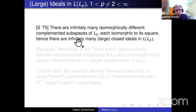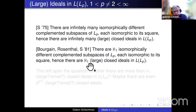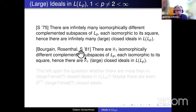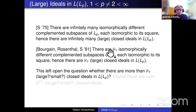This fact also appears in Pelczynski's book. A bit later, together with Bourgain and Rosenthal, we strengthened this theorem and actually got ℵ_1 isomorphically different complemented subspaces of Lp, each isomorphic to its square. By the same reasoning this gives at least ℵ_1 large closed ideals in L(Lp). This was known since 1981, and since then — until about five years ago — nothing more was known.